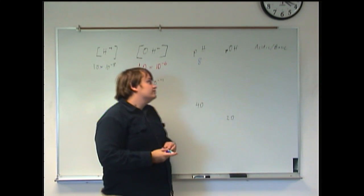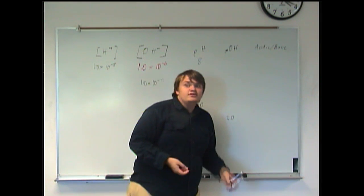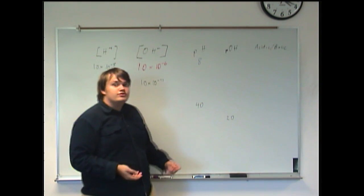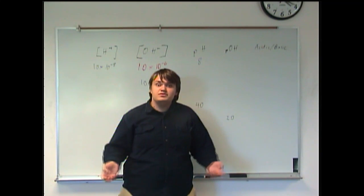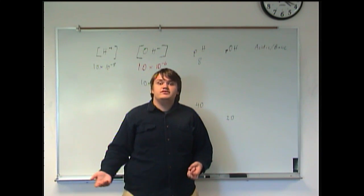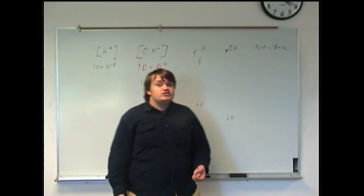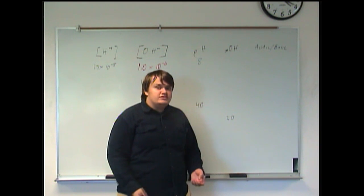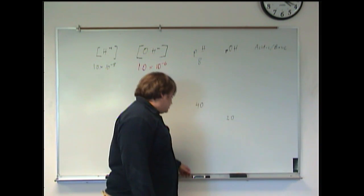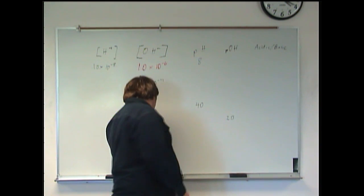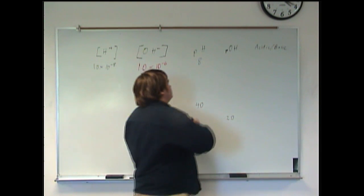And then, finally, to find pOH, remember that pH plus pOH always add up to 14. And so, we can just subtract the pH from 14 to get the pOH. And in this case, it is going to be 6.